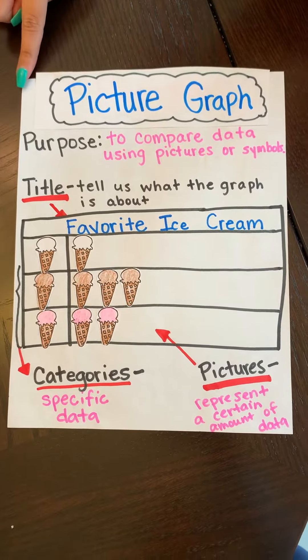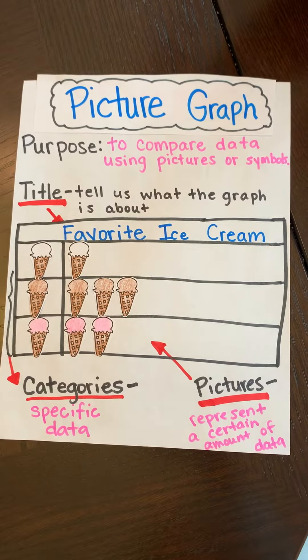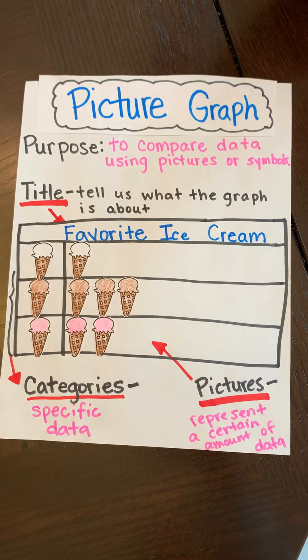The first vocabulary word is data. Data is information. The next vocabulary word is graph. A graph represents collected and organized data.